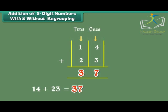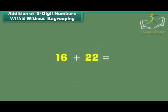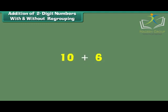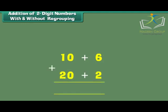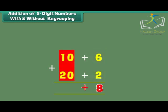We can also add two 2-digit numbers through regrouping. Let us see how. What is 16 plus 22? 16 can be written as 10 plus 6. 22 can be written as 20 plus 2. 6 plus 2 is equal to 8. 10 plus 20 is equal to 30. 30 plus 8 is equal to 38.